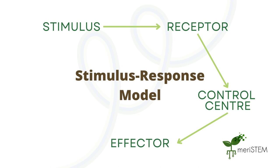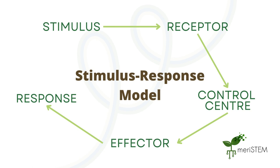The effector, typically a muscle or a gland, will receive the signal from the control centre and will change its output to coordinate a response. This response is the action taken to return the internal conditions to their optimum, or at least to a level which is more suitable for organism functioning. This overall process is a continuous cycle using feedback mechanisms in order to ensure the optimum conditions for the organism are continuously maintained.